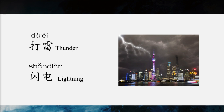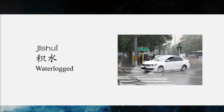If it rains a lot in a very short period of time, the land becomes waterlogged, and it can cause flooding in the city. 是的，如果雨在很短的时间里就下得很大，城市里就会出现积水的问题。So 积水 means waterlogged. 这个在北京的夏天很常见 — this is very common in the summer in Beijing.